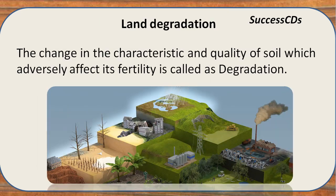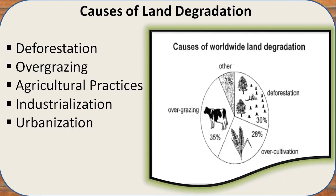Now let's discuss land degradation. If we use and exploit the land in many ways, it will surely be degraded. Land degradation is any change in the characteristics of land which reduces its quality or decreases its fertility. Common causes of land degradation are deforestation, overgrazing, some agricultural practices, industrialization, and urbanization.